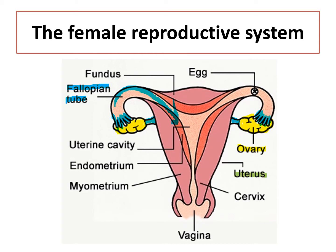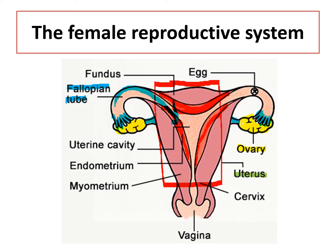Let's look at the uterus next. The uterus, highlighted in red, is very muscular and filled with many blood vessels. The inner lining of the uterus is called the endometrium, which is extremely thick in terms of its muscle layers, also highlighted in red. The uterus is responsible for the care of the embryo, which later becomes the fetus, from implantation up until birth.